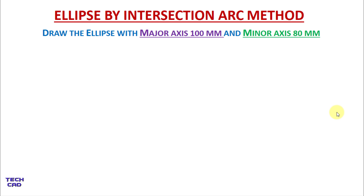Hello everyone. In this tutorial we are going to understand how to draw the ellipse by intersection arc method. The question is: draw the ellipse with major axis 100 mm and minor axis 80 mm.